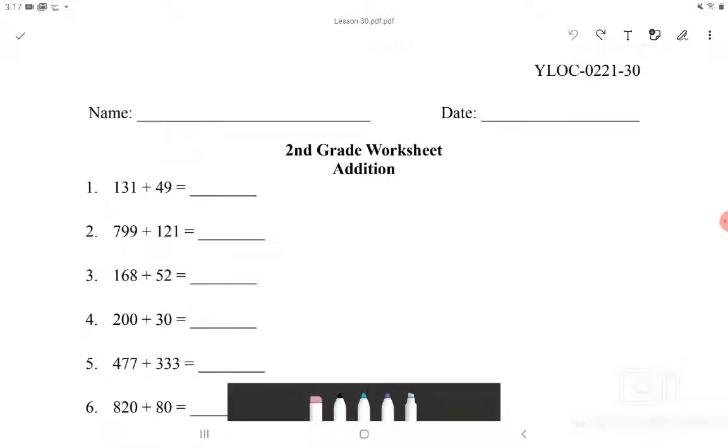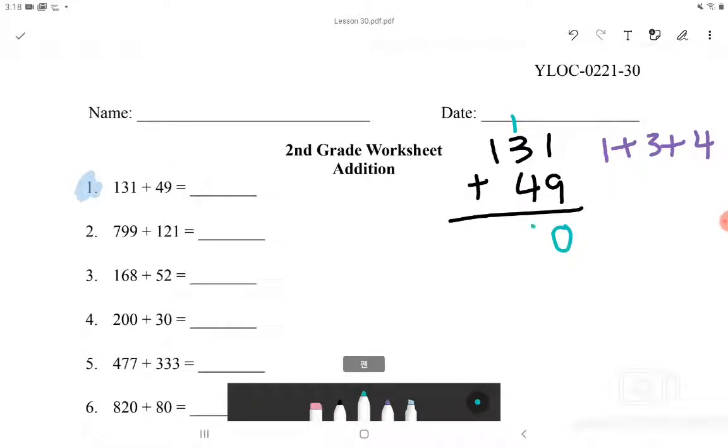This video is for 2nd grade lesson 30 and I will start off with number 1 of the addition section. Number 1 says 131 plus 49. 1 plus 9 is equal to 10, so I will put 1 up there and 0 down here. And then we do 1 plus 3 plus 4 which is equal to 8. And 1 just brought down is equal to 1, so the answer for number 1 will be 180.